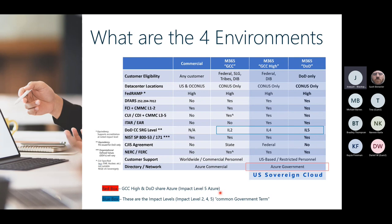Most companies will either have to be in some level of GCC, probably GCC High, depending on their contracts. Basically, it's to share CUI — Controlled but Unclassified Information — between government and defense industry base contractors like General Dynamics, Boeing, Lockheed, and all the small companies doing contract work for the DoD. If you're supporting Army or Navy and using Office 365, you're likely inside the DoD area.